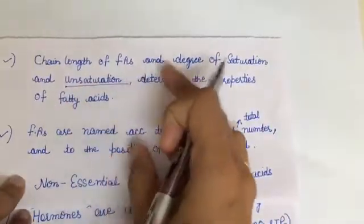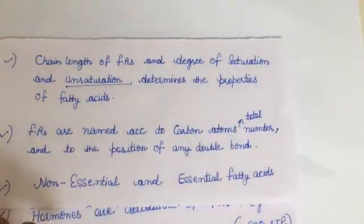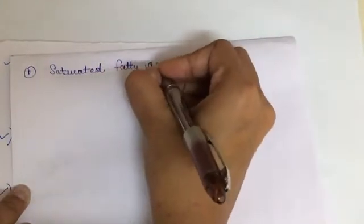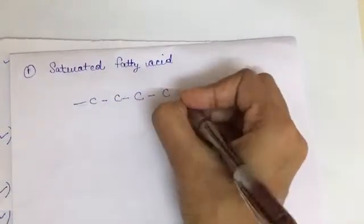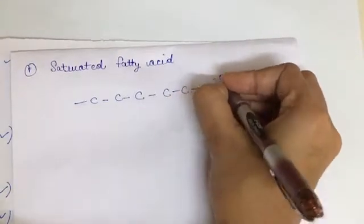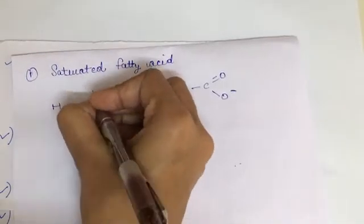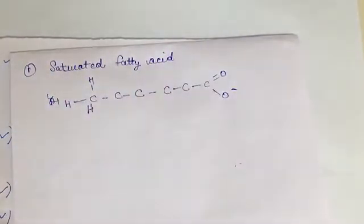The chain length of fatty acids and the degree of saturation and unsaturation determines the properties of fatty acids. Saturated fatty acids have no double bond — the carbon chain looks like C-C-C. Here is the structure of a saturated fatty acid.